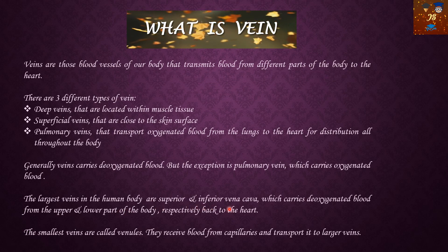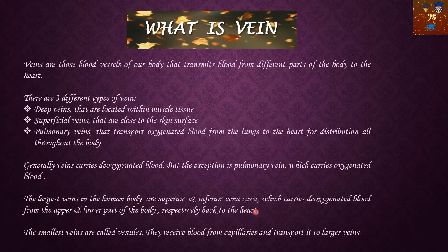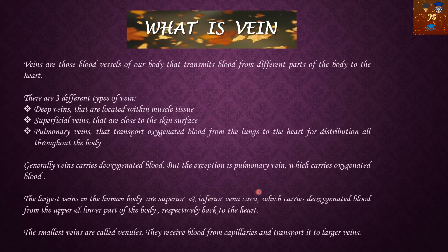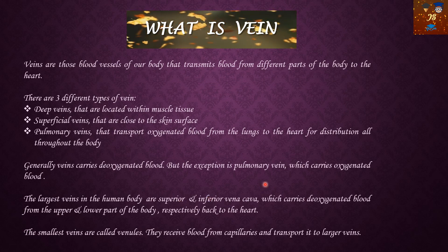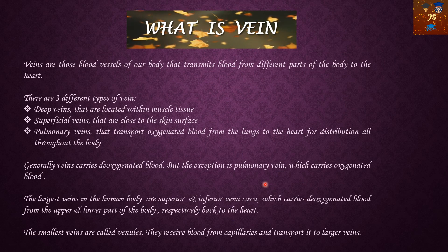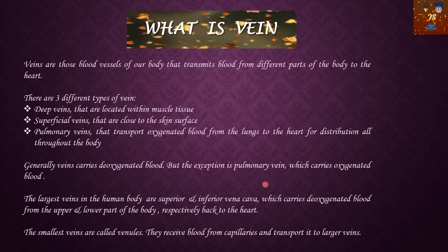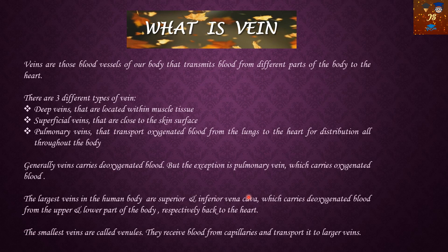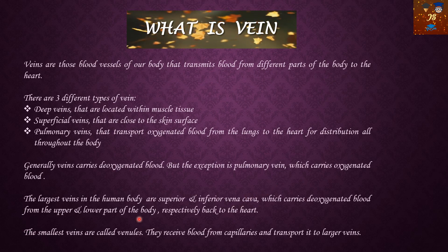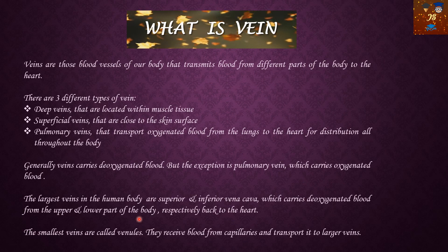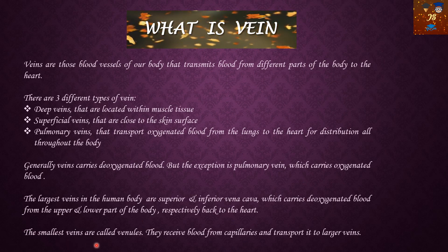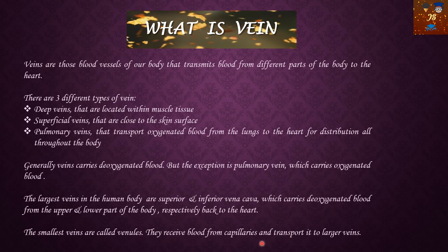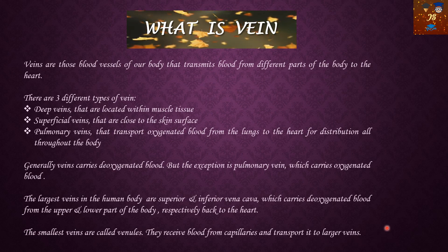The largest veins in the human body are the superior and inferior vena cava. The superior vena cava collects blood from the upper part of the body and conveys it to the right atrium of the heart. The inferior vena cava collects deoxygenated blood from the lower part of the body and drains it into the right atrium for purification. The smallest veins are called venules, which are the branches of veins that receive blood from capillaries and transport it to larger veins.